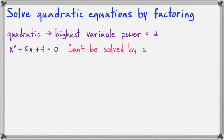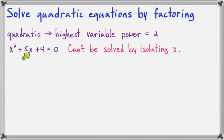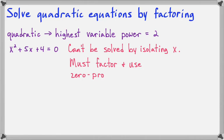We can't solve this by isolating x the way we did with linear equations, because here you have x squared and x, and these can't be combined because they're not like terms. So it has to be done by factoring and using the zero product principle that we learned in the last lesson.